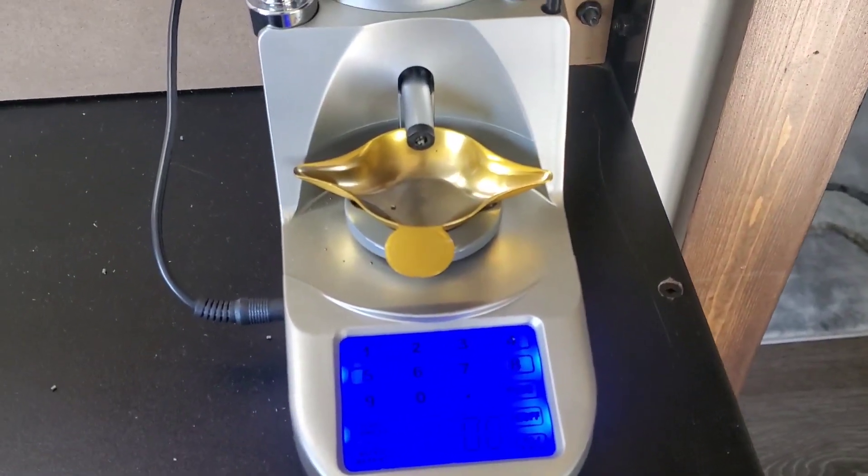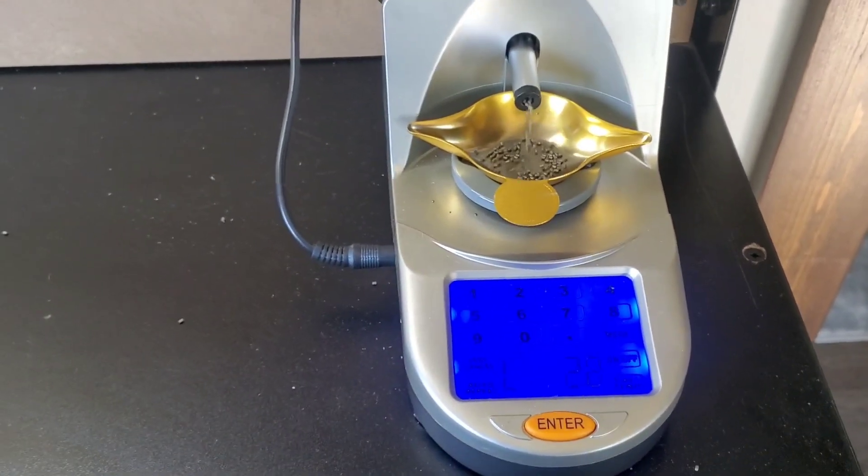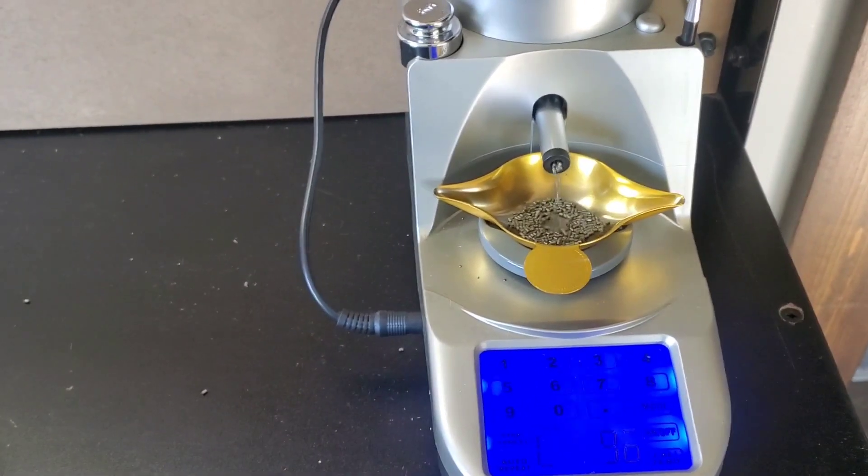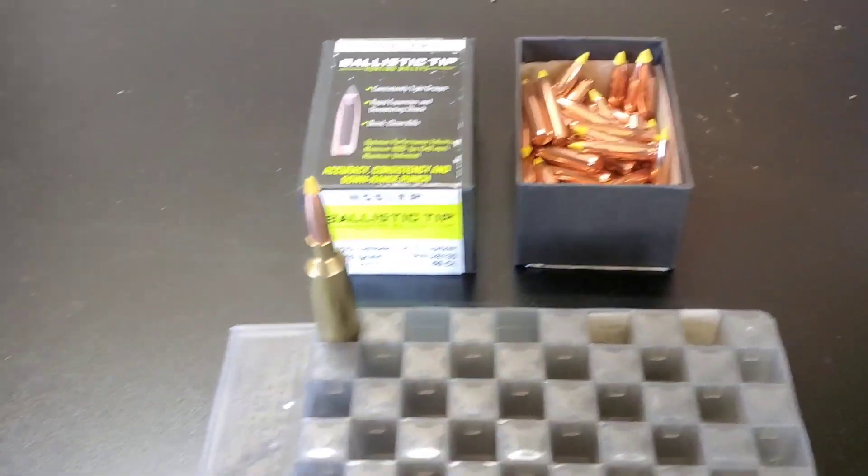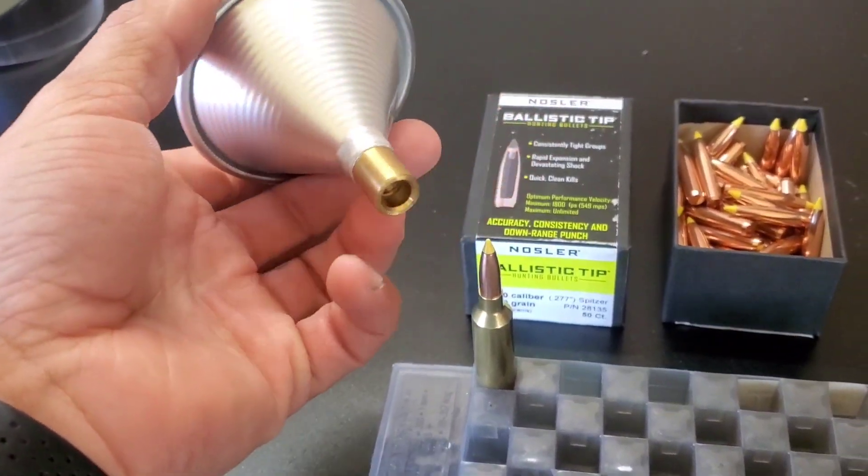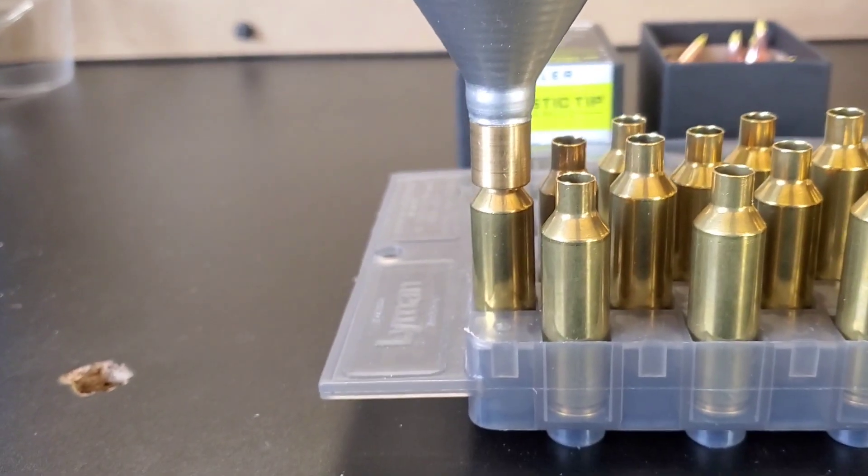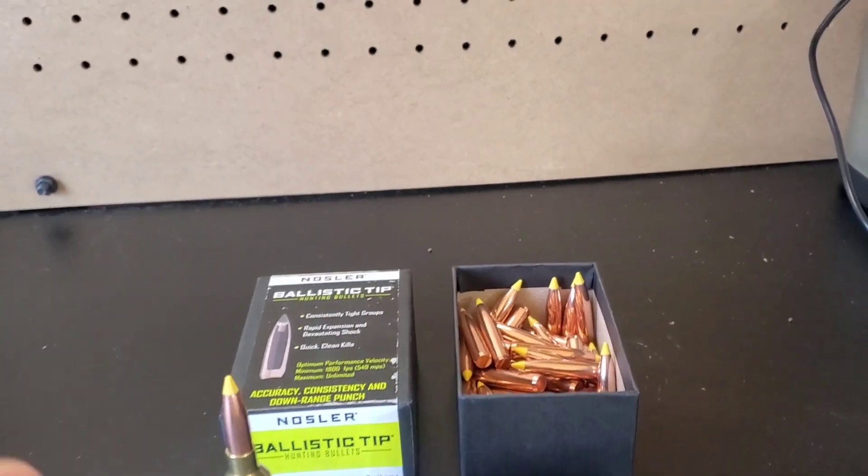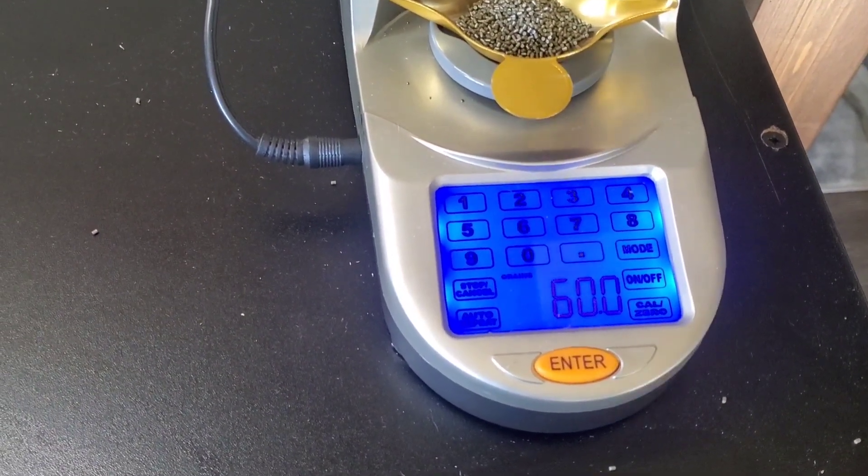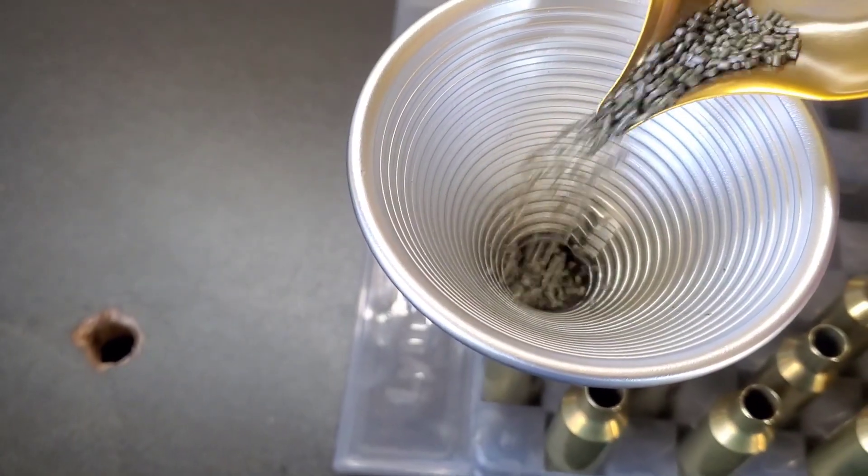Step one is throw a powder charge. I got the Lyman Gen 6 programmed for 60 grains and this is the H4831 shortcut. While that's dropping some grains, I'm using the Saturn funnels - this is for 270. They're specific to the caliber and they pop right on and make a nice fit so that way powder doesn't drip down around your case. That's 60 grains and we'll put that in here. Good.